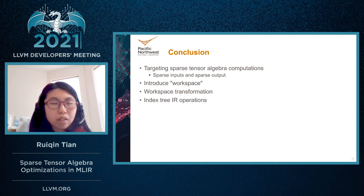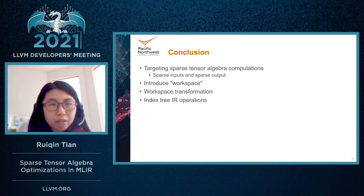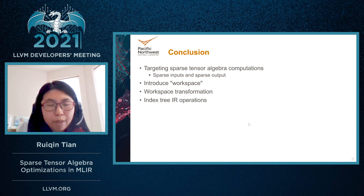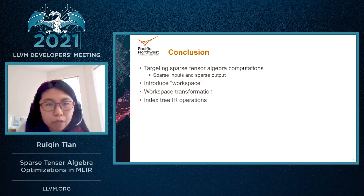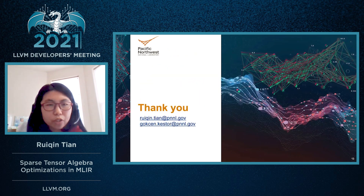In conclusion, we target sparse tensor algebra computations — especially tensor expressions with sparse input and sparse output. We introduce the workspace in code generation and apply workspace transformation. We also define Index Tree IR operations to represent the index tree structures for the code generation phase. Thank you. I'm happy to take any questions, and you can contact me at the provided email addresses.